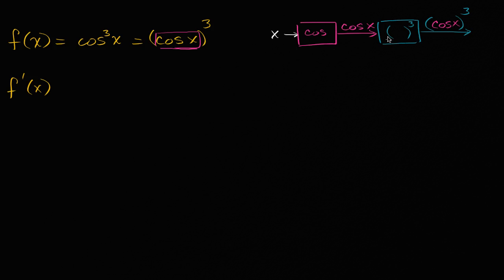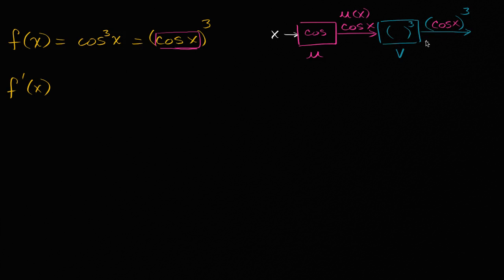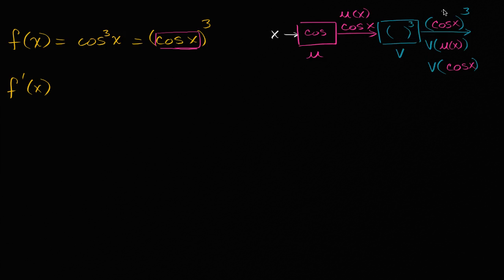We can view this as follows: call the blue function v, and call the inner function u. So if we take x into u, that's u of x, and then if we take u of x as the input into function v, the output is v of u of x — or equivalently, v of cosine of x. And v, whatever you input into it, just takes it to the third power; if you write v of x, it would be x to the third power. So we can write f of x equals v of u of x.